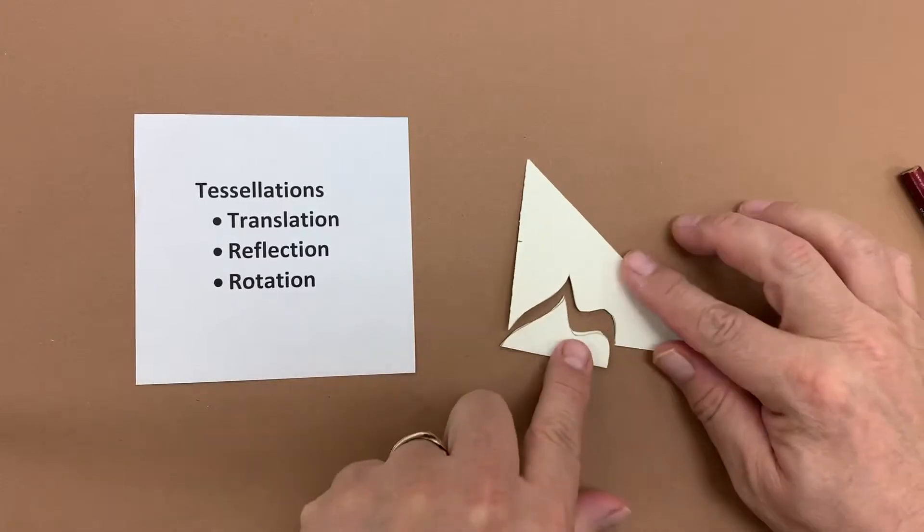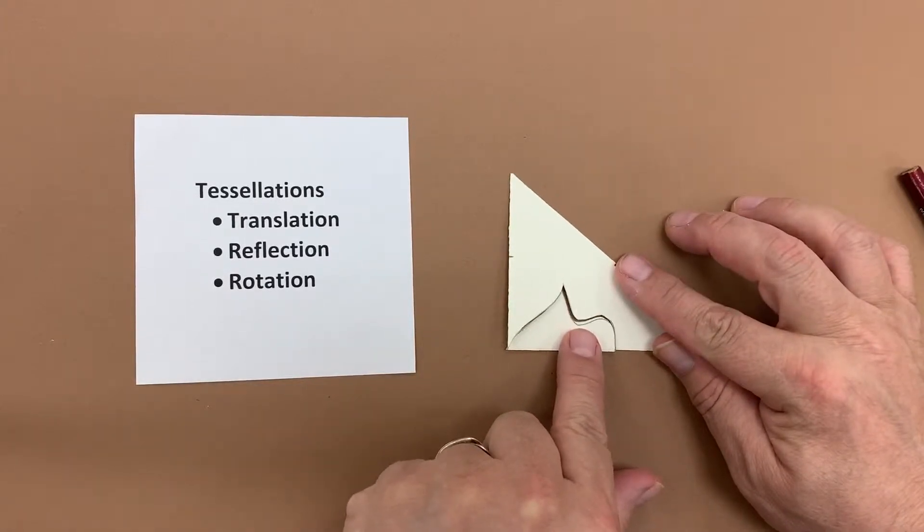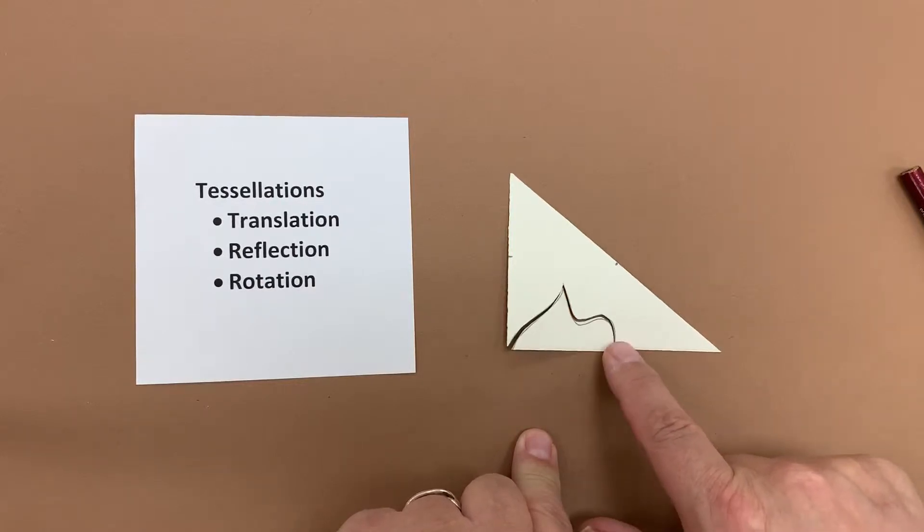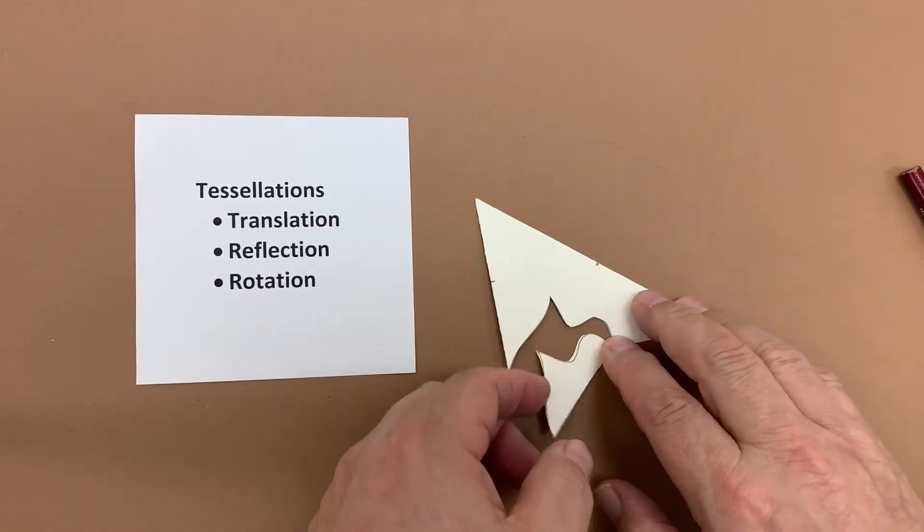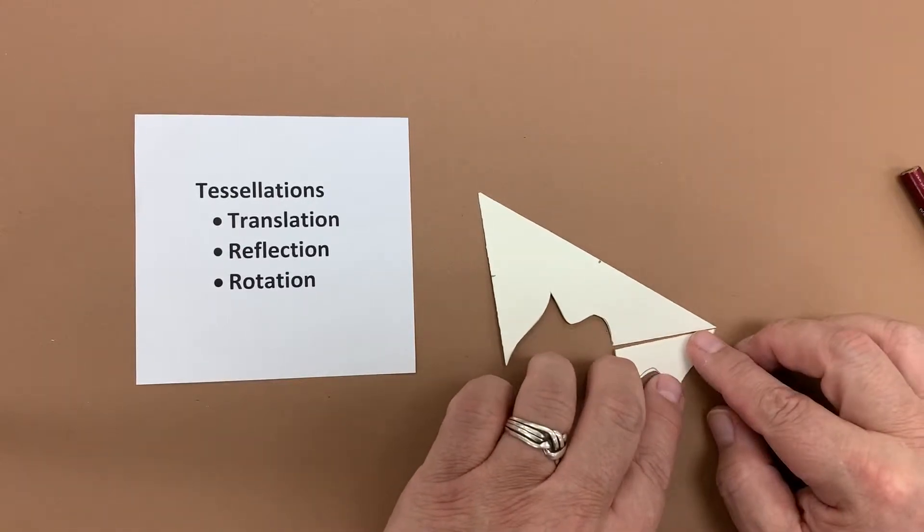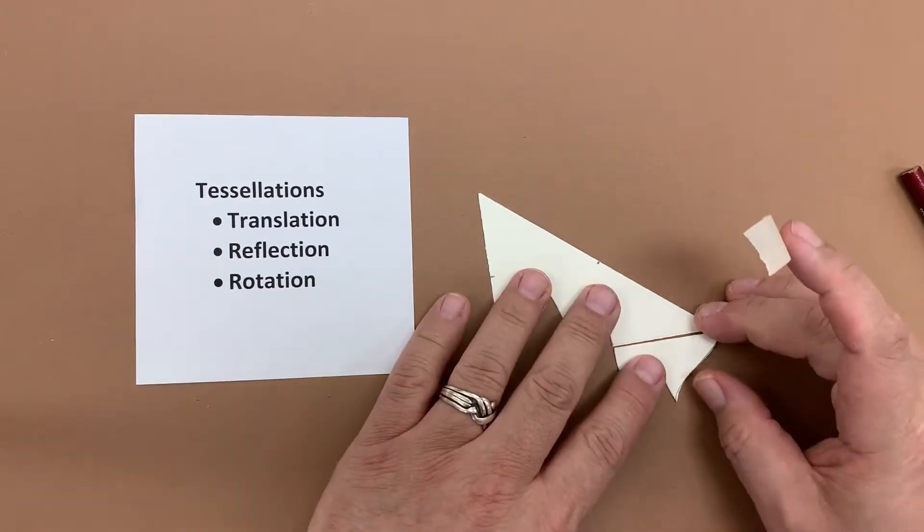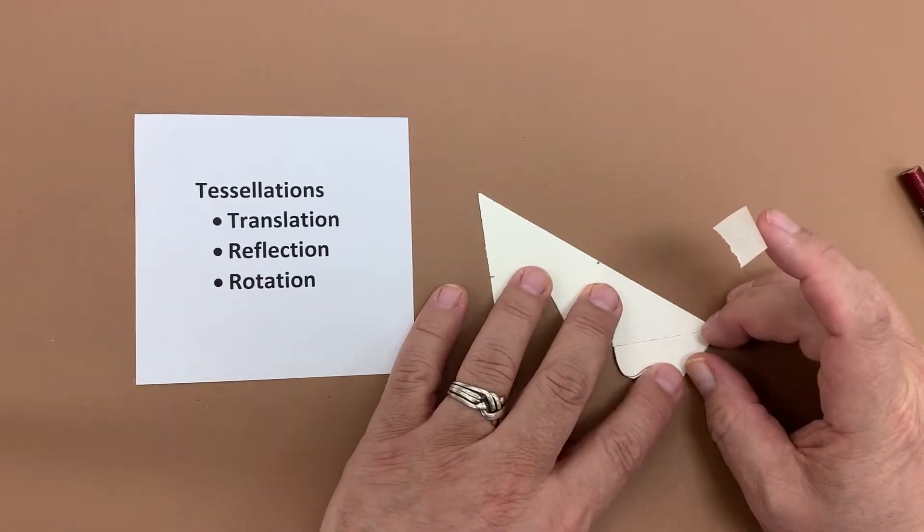Once I have it cut out I want to line it back up make sure I know where it's at because sometimes they'll fall down and flip and I'm going to make it rotate around that center mark. So I'm going to rotate it around the center mark to the other side and then tape it together so that there's no space or gap in between the pieces.